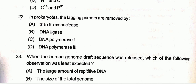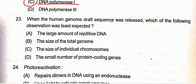Question twenty-two: in prokaryotes, the lagging strand primers are removed by — in prokaryotes, primers are removed by DNA Pol I, so option C will be the correct one.